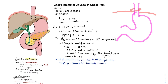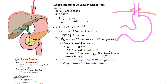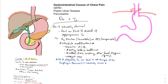An EGD involves passing a flexible camera down the esophagus, taking pictures and video as you go. You can look at the esophagus, the stomach, and advance into the duodenum. This lets you look for ulcers, anything else causing abdominal pain, and abnormal-looking tissue that you can biopsy to rule out cancer.